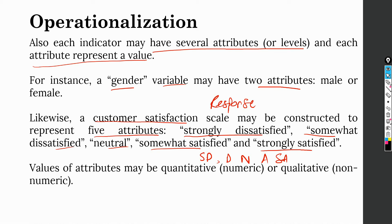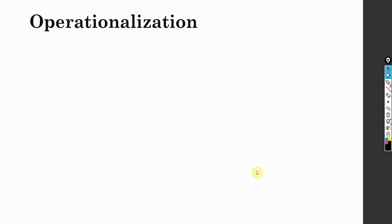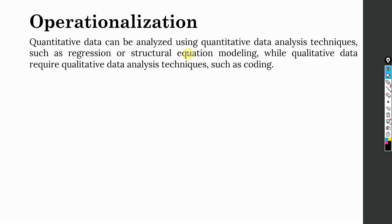The values of these attributes may be quantitative. In this case, what we do is we represent them by a number and there is an order in these numbers. Let's say strongly disagree is one, strongly agree is five and there is an order. Normally we refer to it as quantitative. Quantitative data can be analyzed using quantitative data analysis techniques, just as we normally have used regression and structural equation modeling, while qualitative data requires qualitative data analysis techniques, just as coding or thematic analysis.